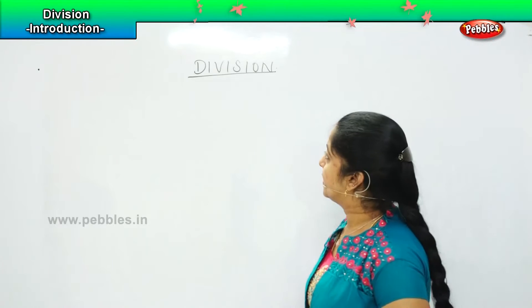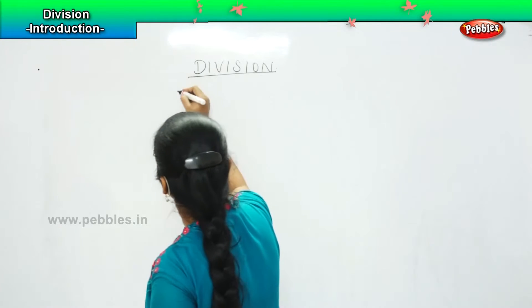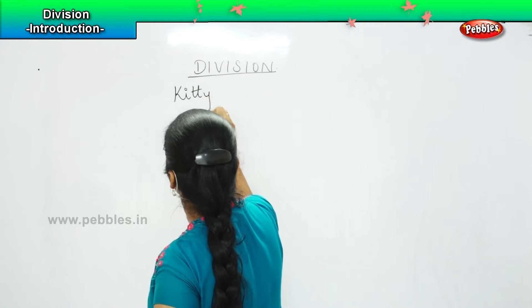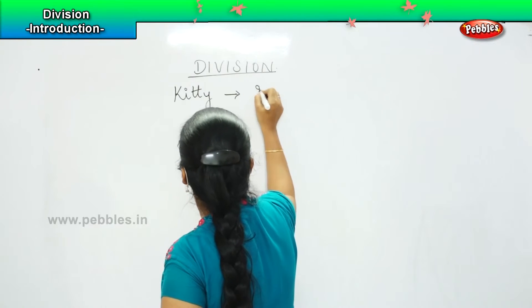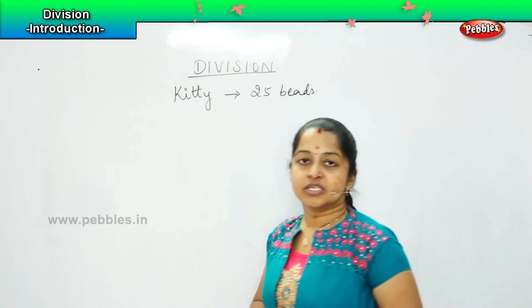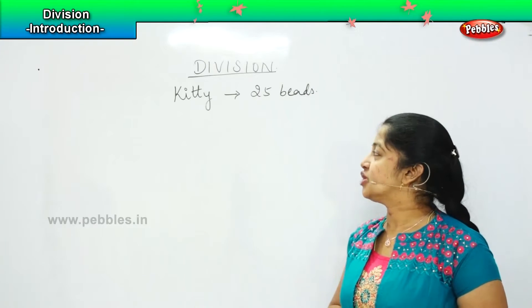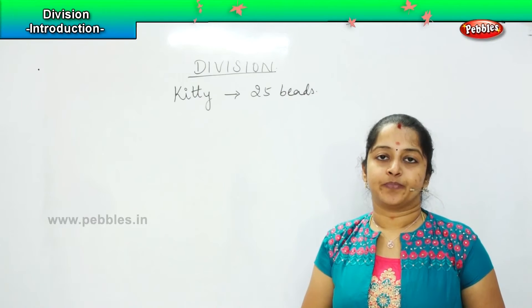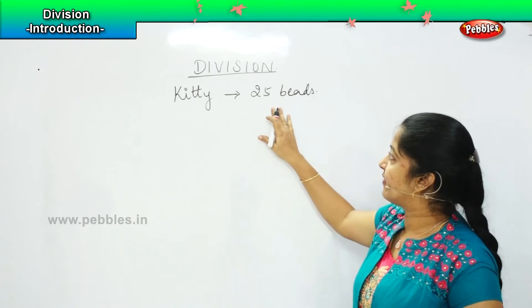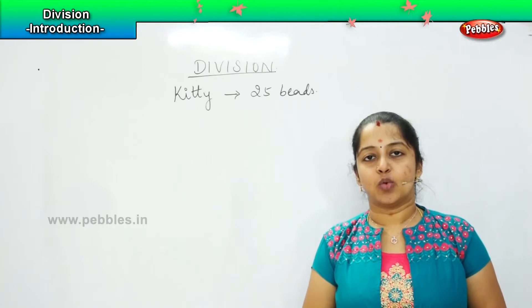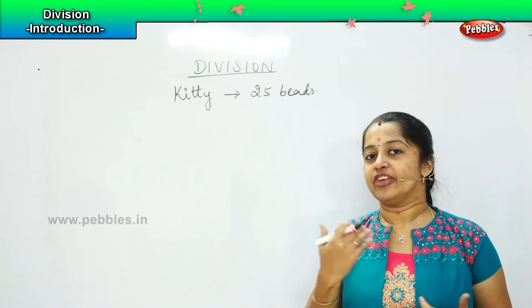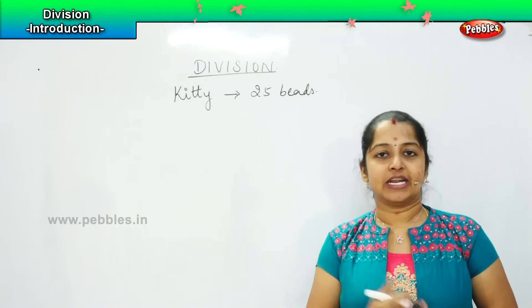Now for example, there is a girl whose name is Kitty. This girl has got 25 beads with her, and she wants to divide these 25 beads equally. Now what will she do? Just imagine that she is having 25 beads and she wants to separate it in small groups so that if any of her friends come, she can gift it to them.